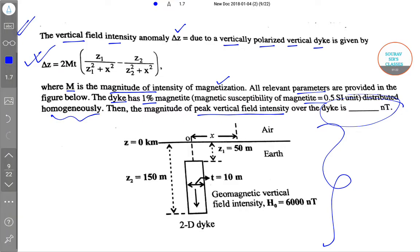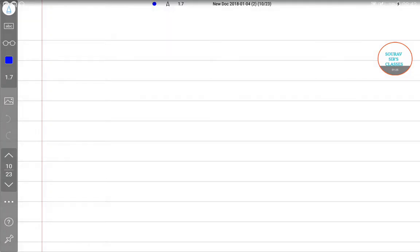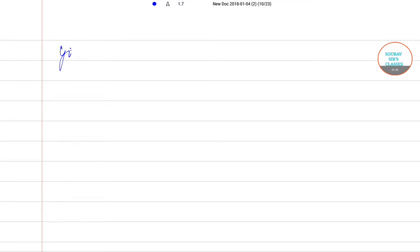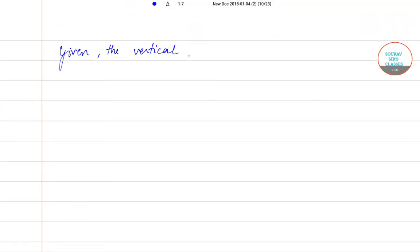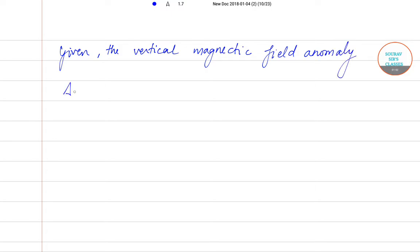So for this I'm inserting a page and now let's get started with the solution. Given the vertical magnetic field anomaly is given by delta z equals 2Mt, bracket open z1 by z1 square plus x square, minus z2 by z2 square plus x square.